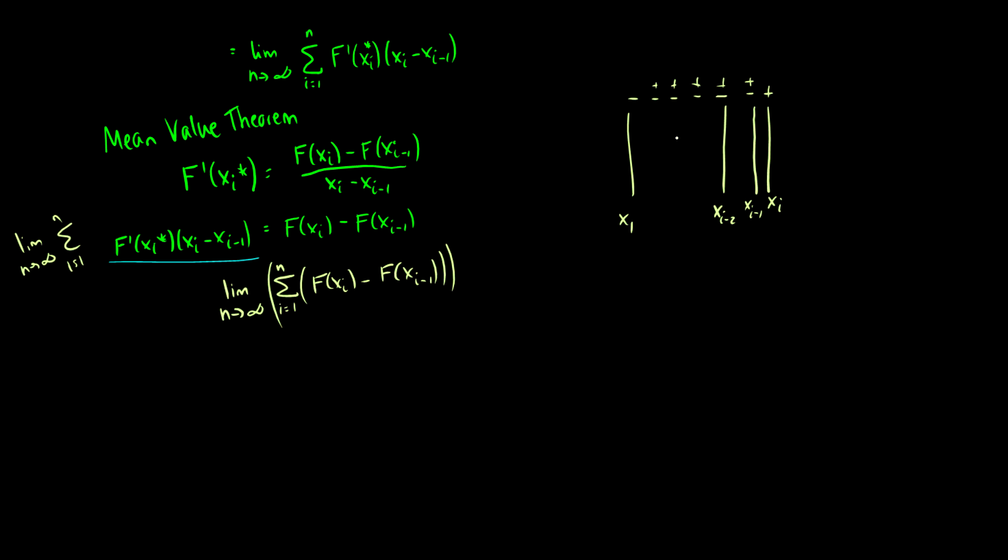But all of these other ones are being canceled to zero because we add and subtract them. So what we have is we have the addition of the last interval and we subtract the first interval. So this is equal to f of x_n minus f of x_0 if we're being proper here.